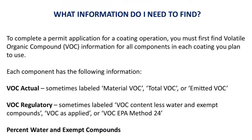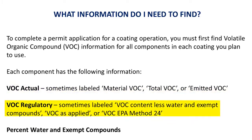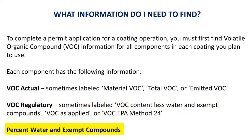Volatile organic compounds are commonly referred to as VOCs. You will need to determine the following information for each coating component: VOC actual, sometimes labeled material VOC, total VOC, or emitted VOC. VOC regulatory, sometimes labeled VOC content less water and exempt compounds, or VOC as applied, or VOC EPA Method 24. Or percent water and exempt compounds.